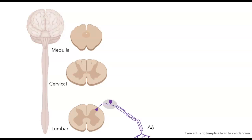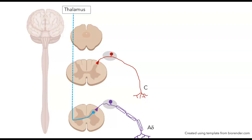Now let's turn to the second pathway — the one used by receptors sensitive to pain and temperature. There are two classes of these receptors: A-delta fibers, which are slightly larger and lightly myelinated, and C fibers, which are thinner and unmyelinated. Both have their cell bodies in the dorsal root ganglion and make synapses onto cells in the dorsal horn. The second-order neuron has its cell body in the dorsal horn, crosses the midline at the level of the spinal cord, and ascends all the way to the thalamus — this is true for both A-delta and C fibers.